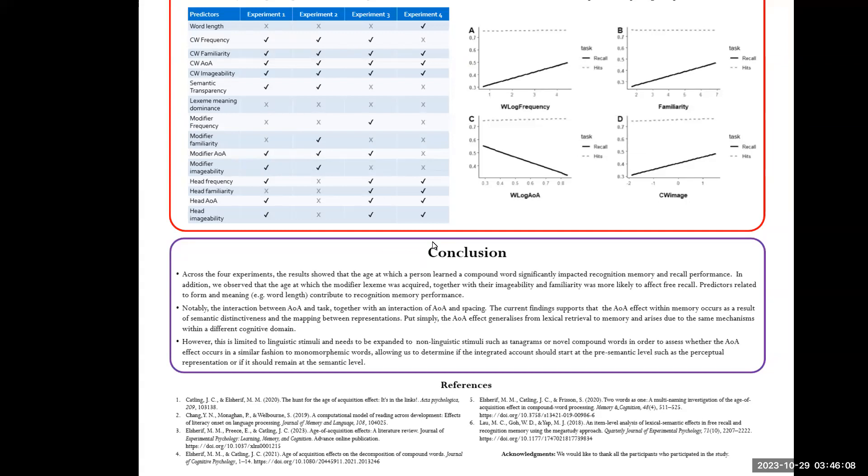Later acquired form and meaning contribute to recognition memory performance. We also looked at the interaction between AOA and spacing, and unspaced words produced a smaller AOA effect than its spaced components. And what this could mean is that we're seeing the magnitude of the mapping between representations.